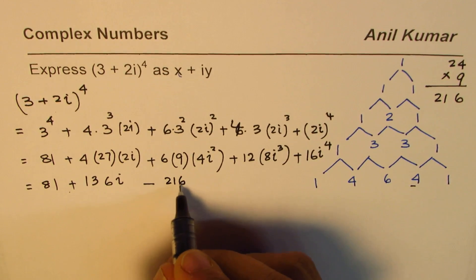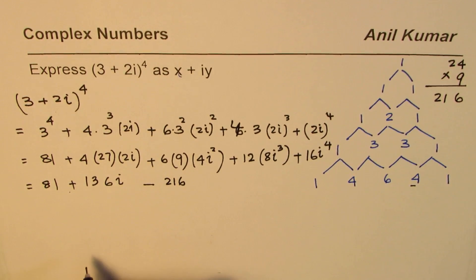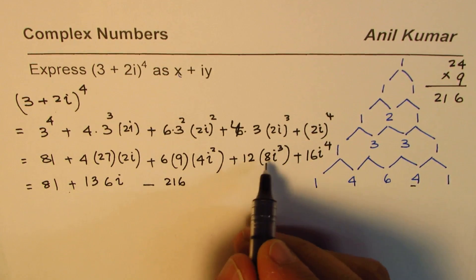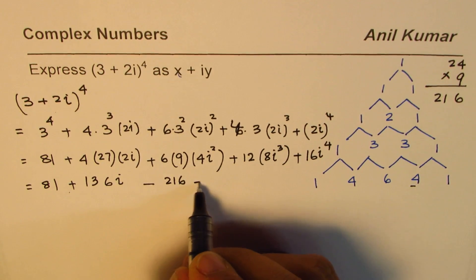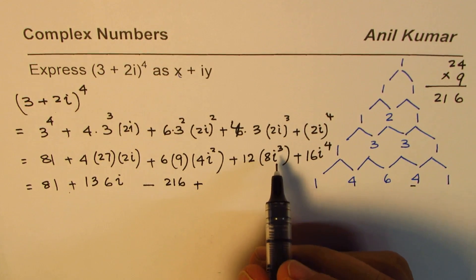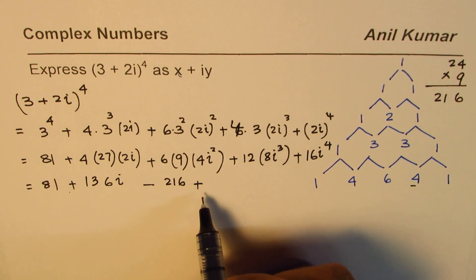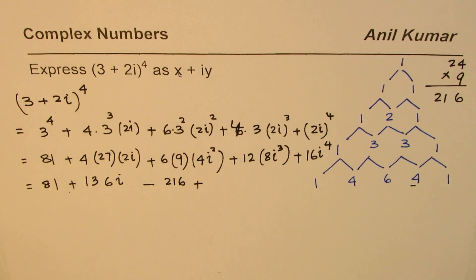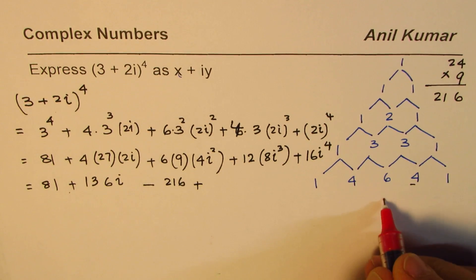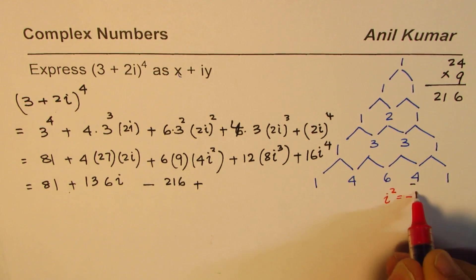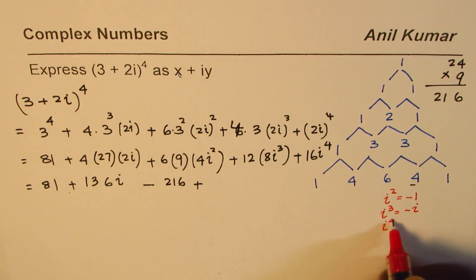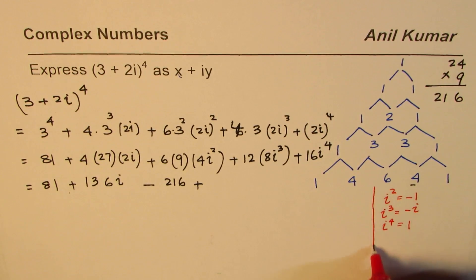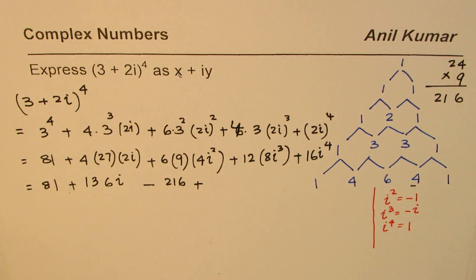216 with i square minus 1. Now in this case 12 times 8, i cube is minus i. I should write minus here, we'll put minus i here. Let me rewrite: i square is minus 1, i cube is minus 1 times i which is minus i, and i to the power of 4 is 1. So we are going to use this while expanding.